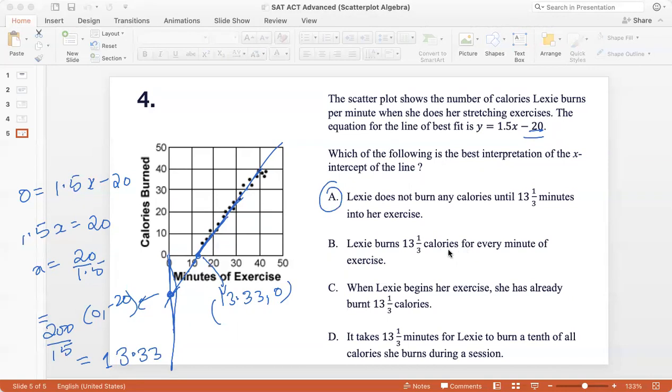Lexi burns 13.13 calories for every minute of her exercise. This is the interpretation of the slope, which is 1.5. So it can't be this. It would be that for every minute of her exercise, Lexi burns 1.5 calories. So B is wrong. When Lexi begins her exercise, she has already burned 13.13 calories. That makes no sense. So this is out. It takes 13.13 minutes for Lexi to burn a 10th of all calories she burns during the session. That's again, irrelevant because we don't know how many calories she'll burn during the session. That would depend on how many minutes she exercises. So the right answer is option A.